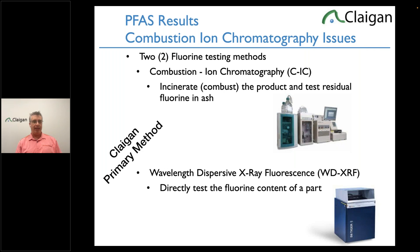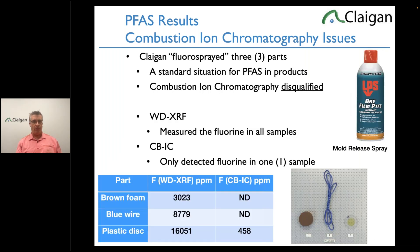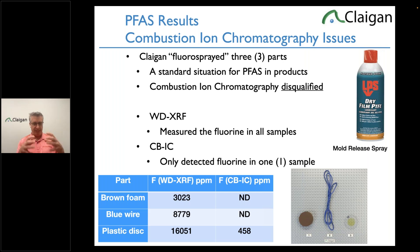We've done a lot of interlaboratory work with combustion ion chromatography. It can't pick up PFAS in surface coatings on plastic properly — and that's a problem. For example, we took three random parts, sprayed them with a very common PFAS fluorospray, either fluorosilicone or dry PTFE. XRF sees it easily, but a combustion bomb doesn't see it until it's over 10,000 ppm — a little higher than the 50 ppm reporting limit. Same issue with coffee cups and food packaging.